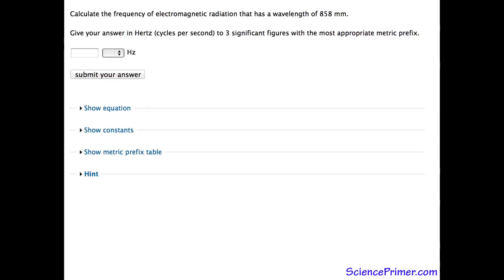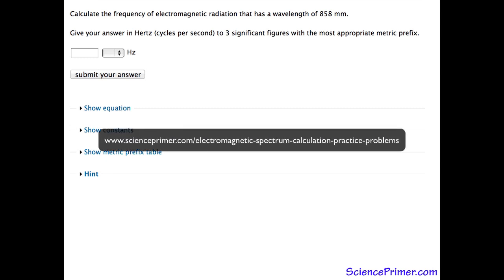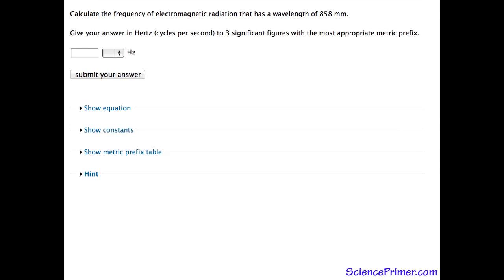This is an example solution to one of the electromagnetic spectrum calculation practice problems from scienceprimer.com. The question we're going to answer is: calculate the frequency of electromagnetic radiation that has a wavelength of 858 millimeters. We have to give the answer in hertz to three significant figures using the most appropriate metric prefix.